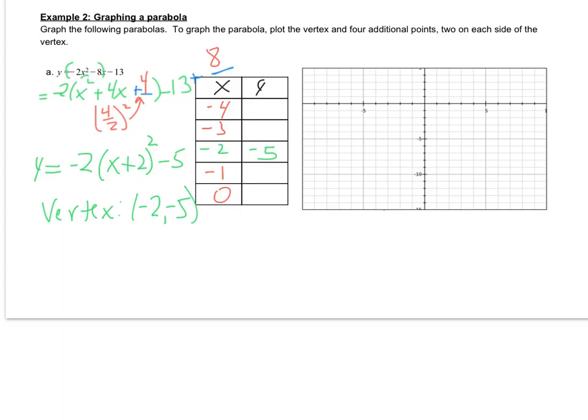If you found the y values correctly, you get negative 13, negative 7, negative 7, and negative 13. And then all we have to do is go and plot those points on our graph.